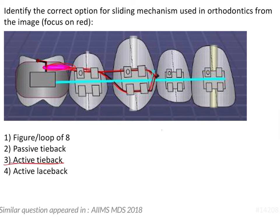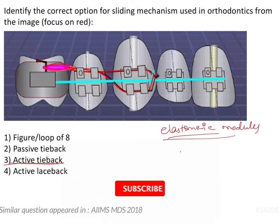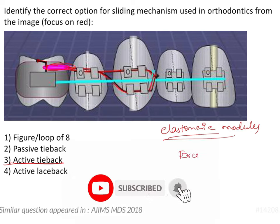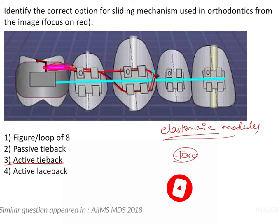What is an active tie back? Whenever there is an elastomeric module or any elastomeric unit like an e-chain or an elastic thread, they are force-applying units. Whenever they are present in the system, the system is known as active.